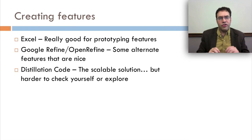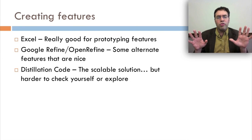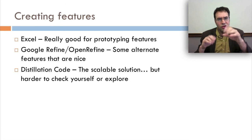How do you create features? Well, there's three things that my lab does and there's innumerable other solutions. Microsoft Excel, really good for prototyping features and seeing what you're doing. Google Refine, now called OpenRefine, has some alternate features that are really nice. And third, distillation code, the scalable solution, but harder to check yourself or explore.